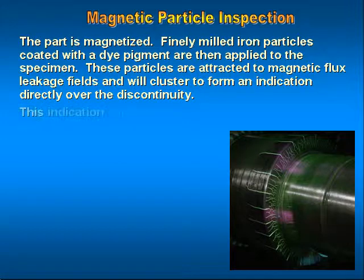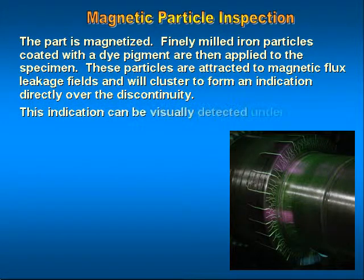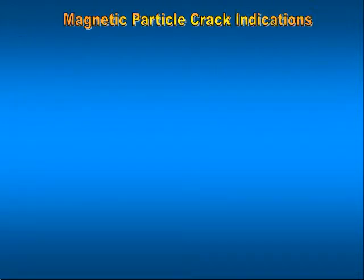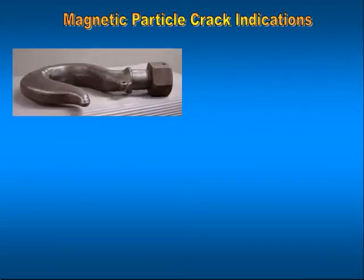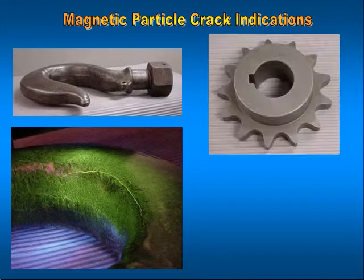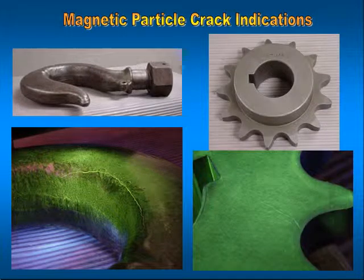This indication can be visually detected under proper lighting conditions. In this slide, you will see a crack-like indication in the throat of a crane hook on the left. The same indication can be seen in the surface of the sprocket on the right.